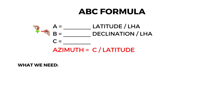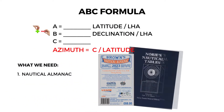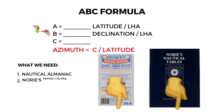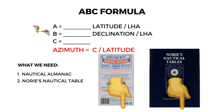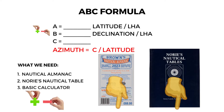What we only need are the nautical almanac, Norie's nautical tables, and a basic calculator. You can get the links for our nautical almanac and Norie's nautical tables down in the description below.